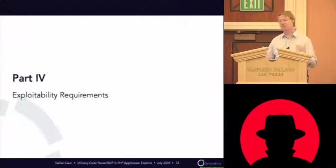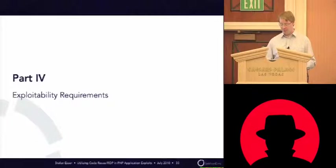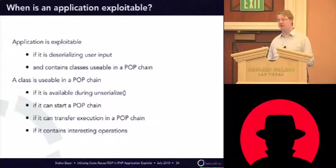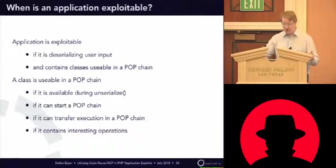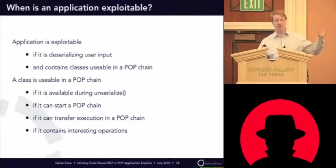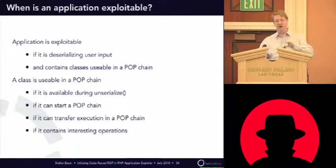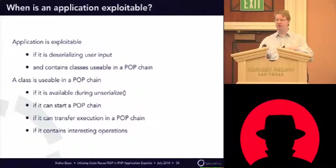So those were the vulnerability classes that could allow attacks against unserialize. But to do property-oriented programming, you need more. You need first of all the deserializing of malicious input, but you also need classes that are usable for your POP chain — your property-oriented programming chain.